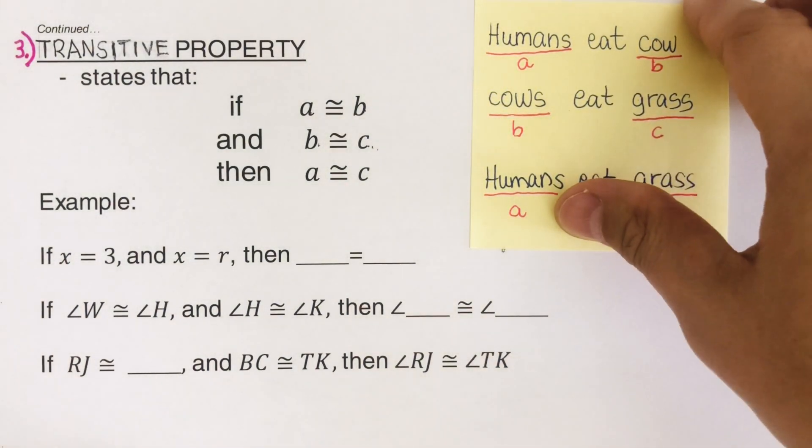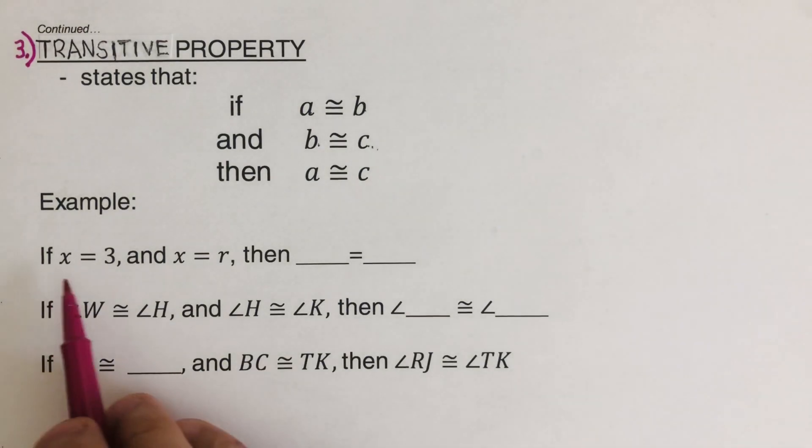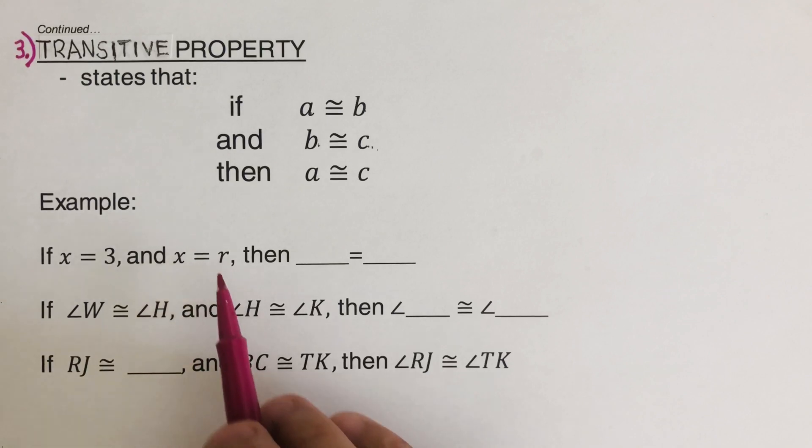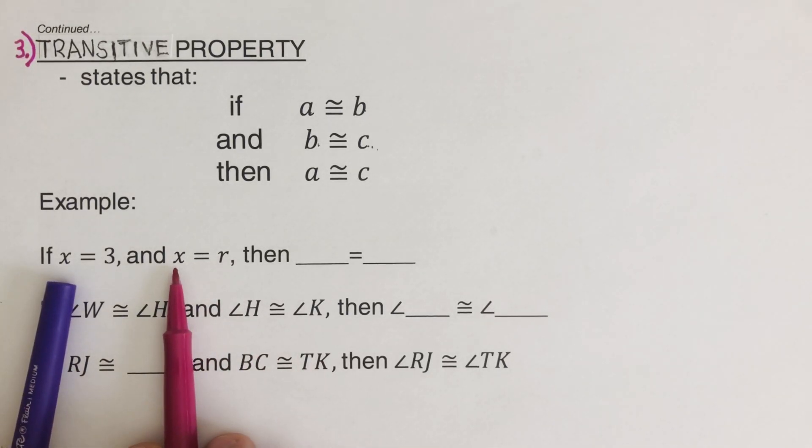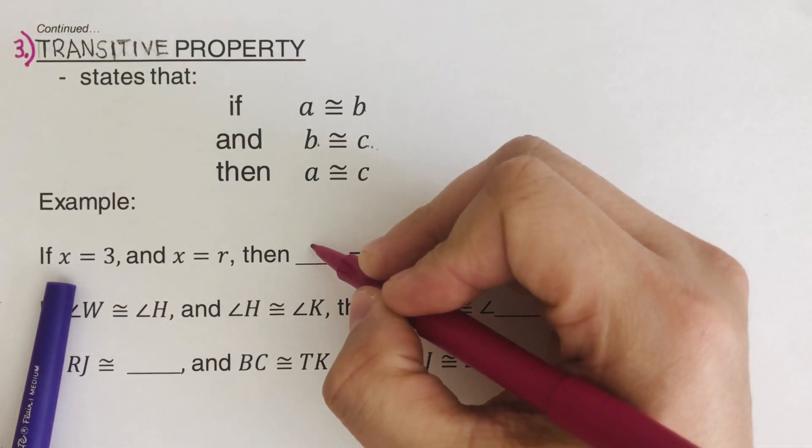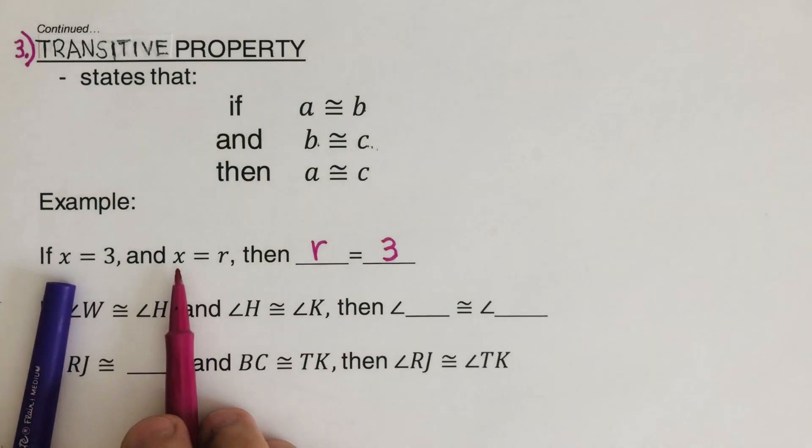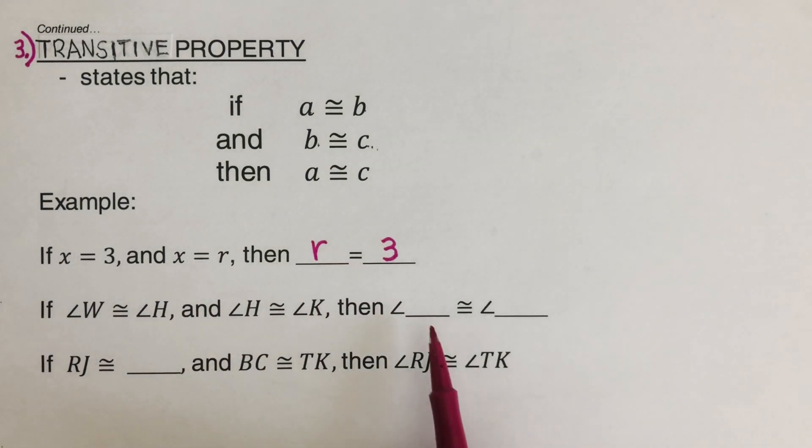Okay. Let's take this example right here. So if X is equal to 3 and X is equal to R, so both are equal to X. That means R is equal to 3 because both of them are equal to X. You can switch around. It doesn't matter. Now try these three blanks on your own.